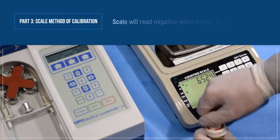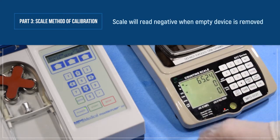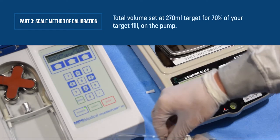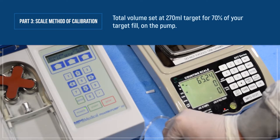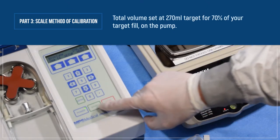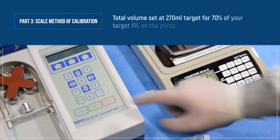In this example, we've set our pump to fill to 270 mLs. Your sample size should target for 70% of your total target fill. Connect the device and press start. Note the device is filling off-screen.